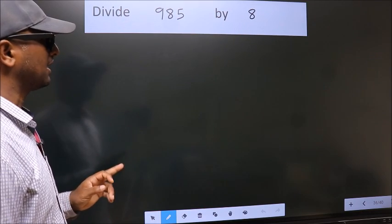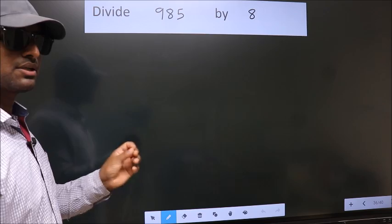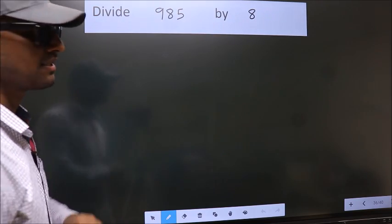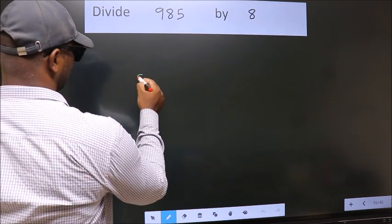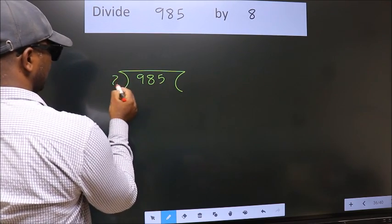Divide 985 by 8. To do this division, we should frame it in this way. 985 here, 8 here.